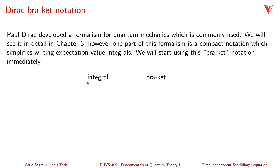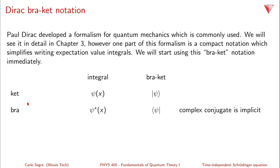Up to now, we've looked at the integral form of things, and we have a bracket form. The ket is the wave function ψ(x) — all spatial, time-independent functions — and is denoted by a vertical bar, ψ, and an angle bracket to the right: |ψ⟩. ψ* is called a bra in this notation, denoted by a left angle bracket, ψ, and a bar: ⟨ψ|. The complex conjugate is implicit when you have a left-facing angle bracket, so ⟨ψ| really means ψ*.